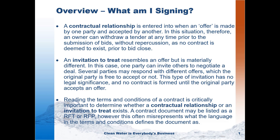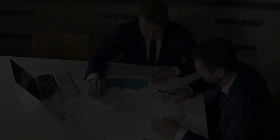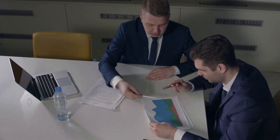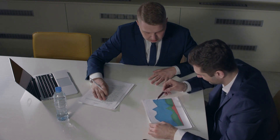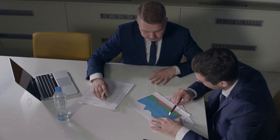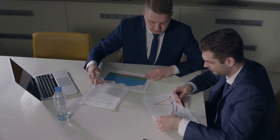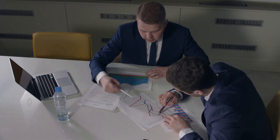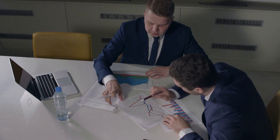Reading the terms and conditions of a contract is critically important to determine whether a contractual relationship or an invitation to treat exists. A contract document may be listed as an RFP, NRFP, or RFQ; however, this often misrepresents what the language in the terms and conditions actually defines the document as. This is so important because the implications for bidding on a Contract A binding document versus a non-Contract A document cannot be understated. There are much different duties and rules which apply to owners and bidders, which could render you powerless or powerful, depending on the type of project call and what you know about the duties that apply.